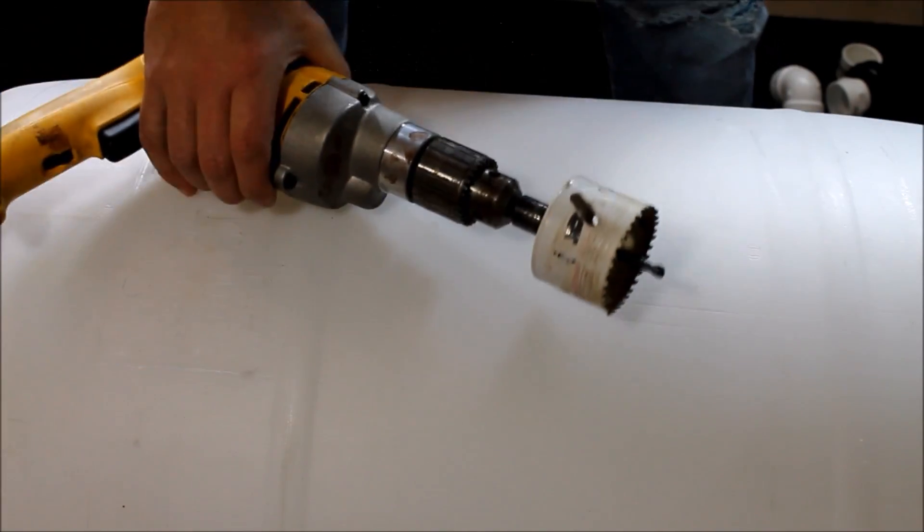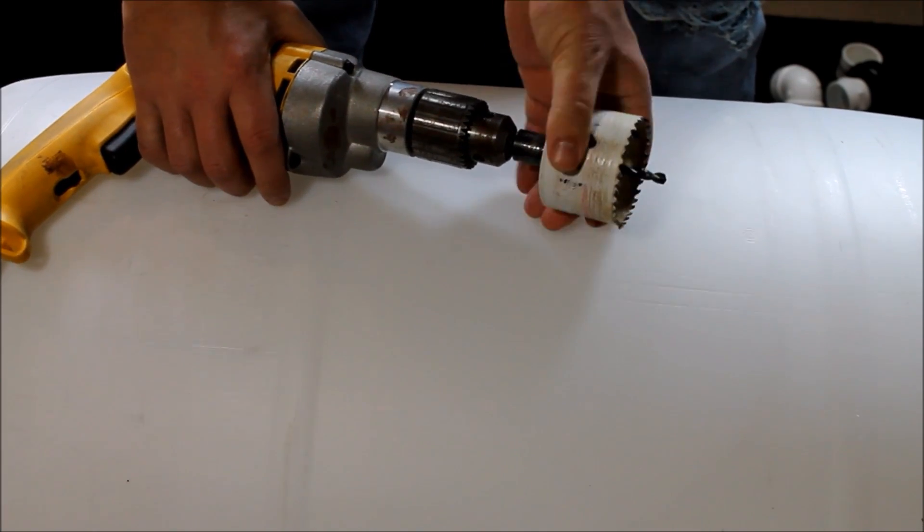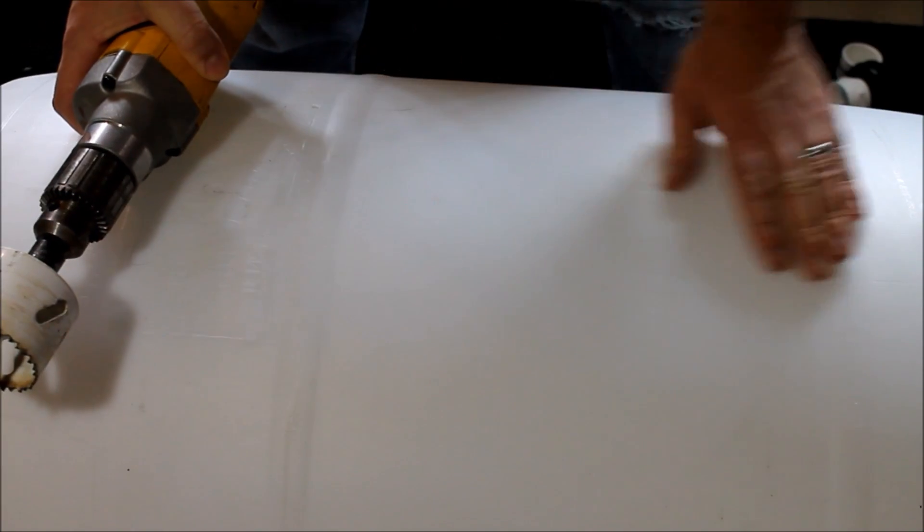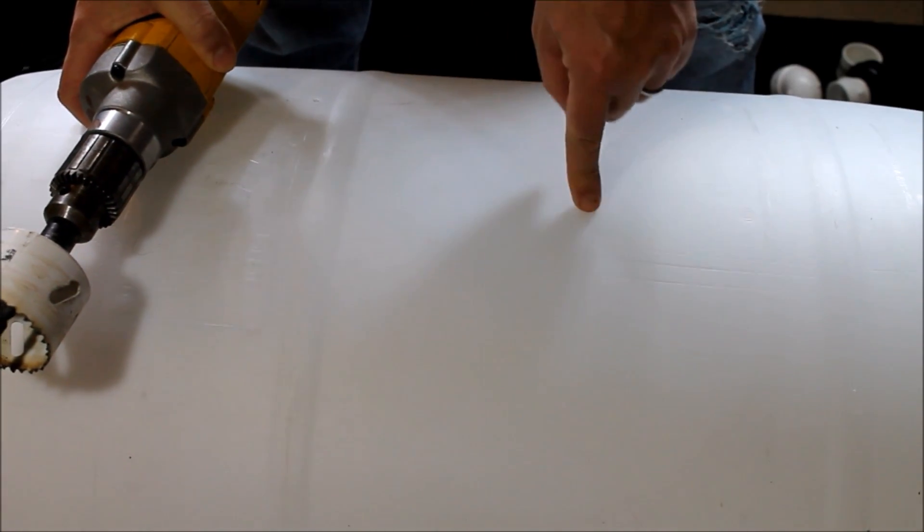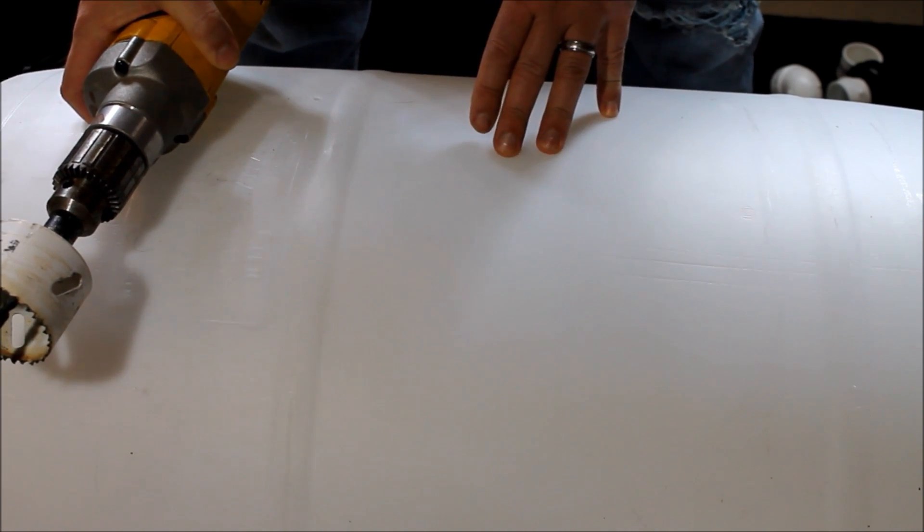I'm using an inch and a half bulkhead adapter and a two and a half inch hole saw, just a regular old hole saw. I'm going to make some measurements and mark my hole here, drill a nice clean hole through the PVC, clean that up, and then we'll get the bulkhead mounted in.